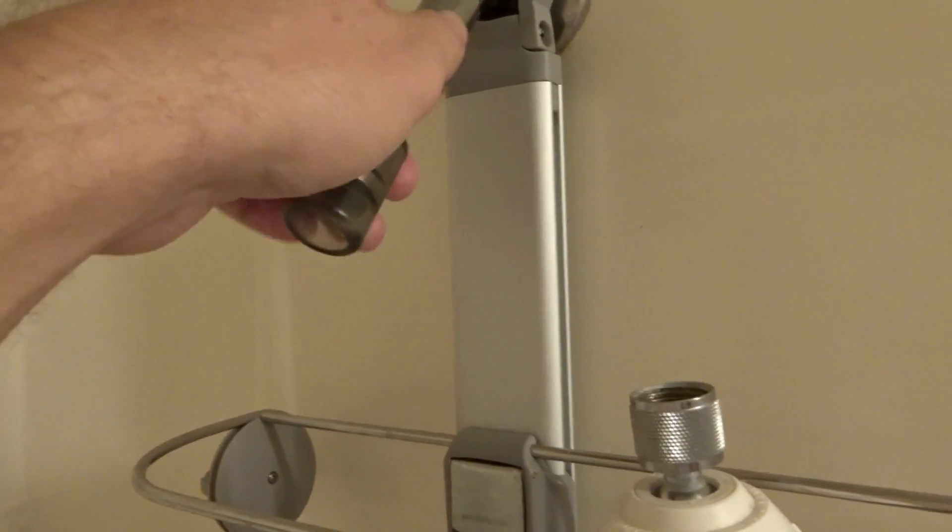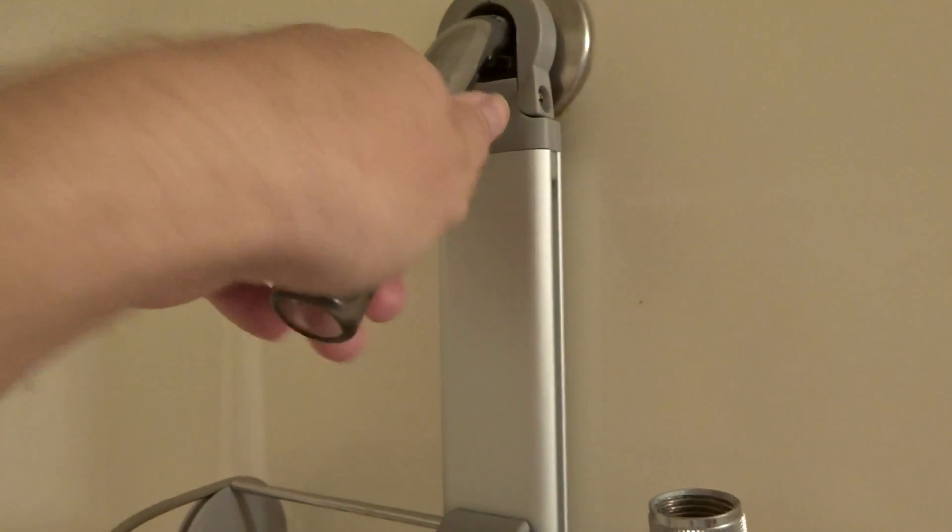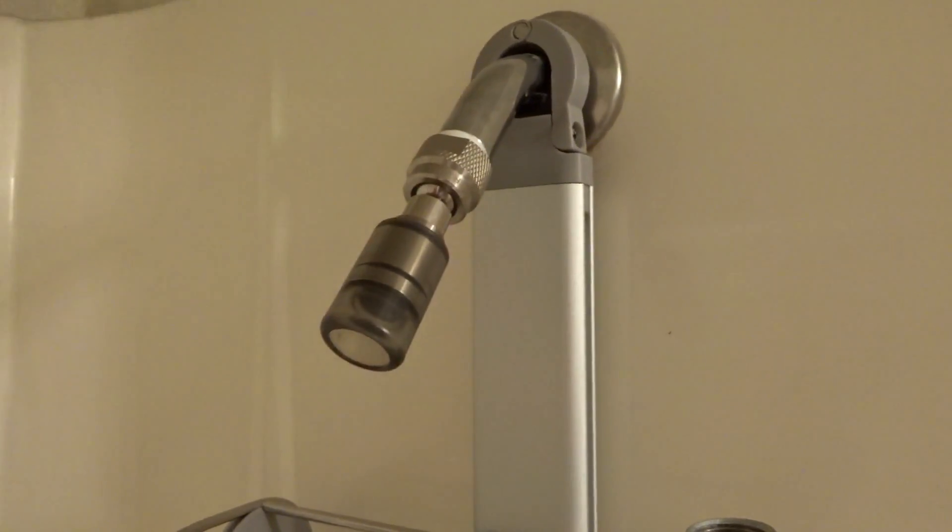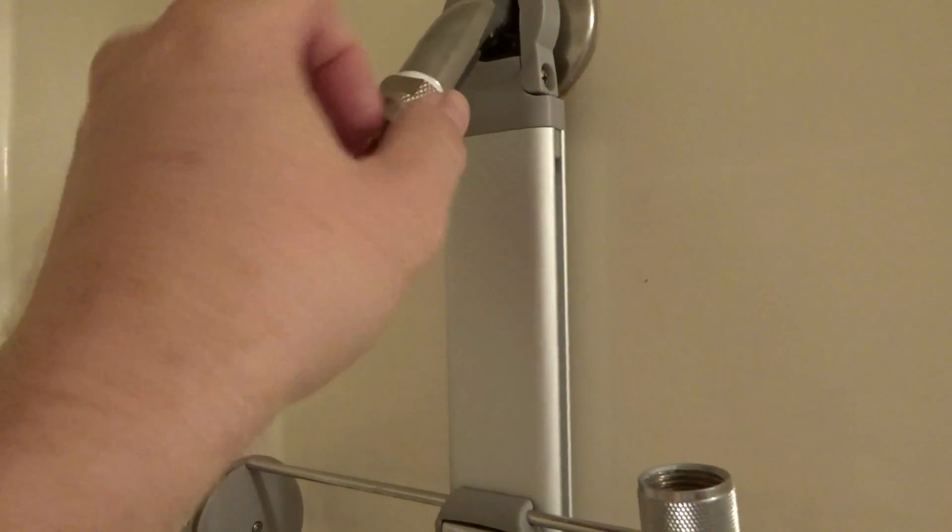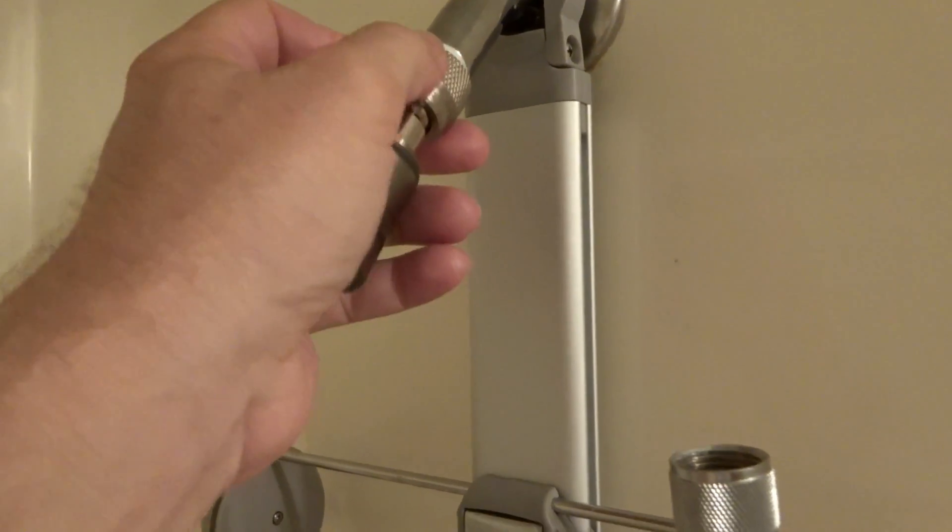Installation is very simple. You take your old shower head off, which might require some pliers depending on how long it's been on there. Once you've got the shower head off, just clean the threads off with a towel or something like that.